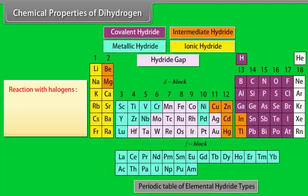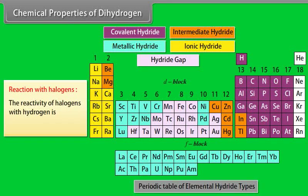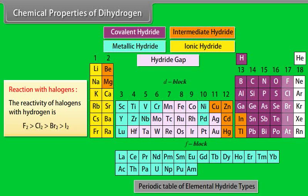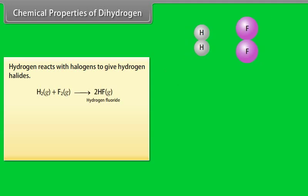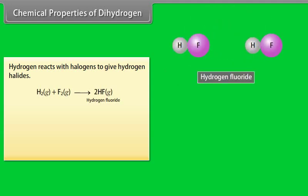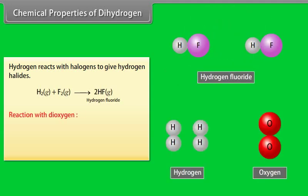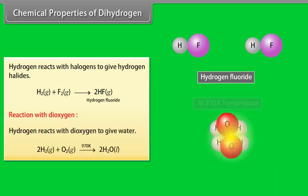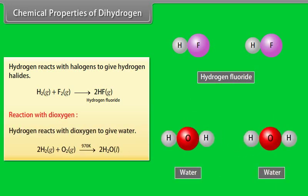Chemical properties of dihydrogen. Reaction with halogens: The reactivity of halogens with hydrogen is fluorine greater than chlorine, greater than bromine, greater than iodine. Hydrogen reacts with halogens to give hydrogen halides. Reaction with dioxygen: Hydrogen reacts with dioxygen to give water.